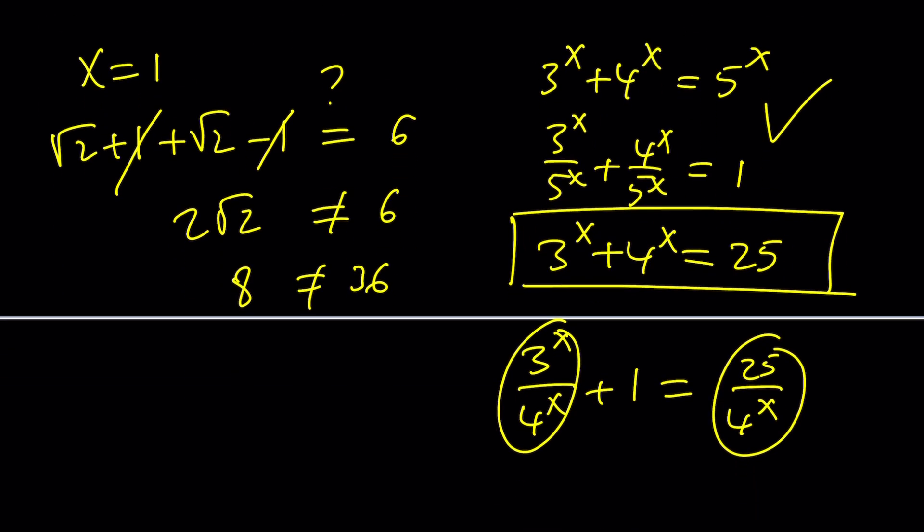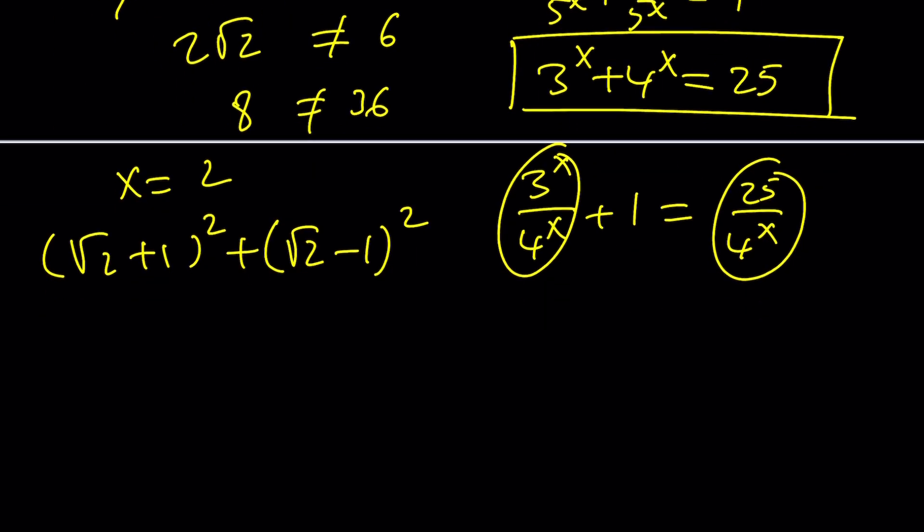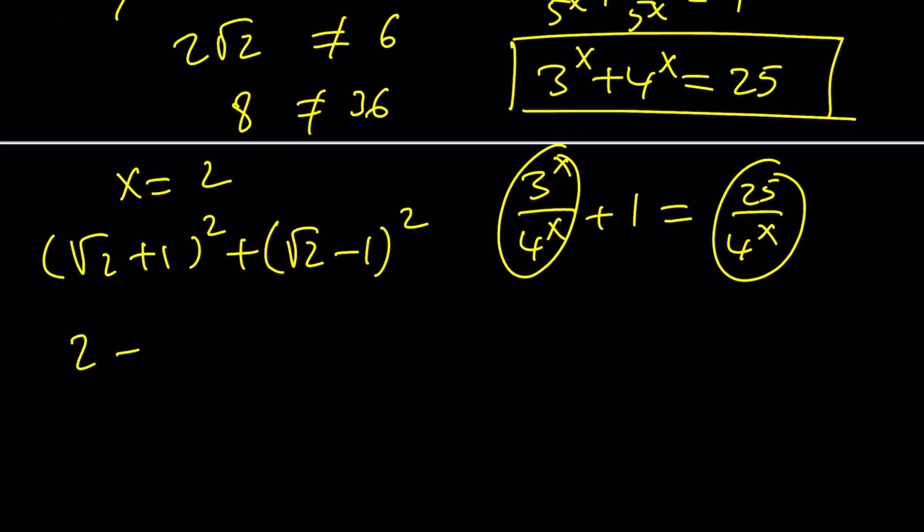Well, this doesn't work. Maybe 2, x equals 2 works. Let's give it a try. Okay. If you use x equals 2, then you will get the following. And let's square each one. This is 2 plus 2 root 2 plus 1. And this is 2 minus 2 root 2 plus 1. 2 root 2 cancels out. 2 plus 1 is 3. 2 plus 1 is 3. 3 plus 3 is equal to 6. Yay! We solved it. Great. Trial and error wins, right? Well, this time, it doesn't always work like that.